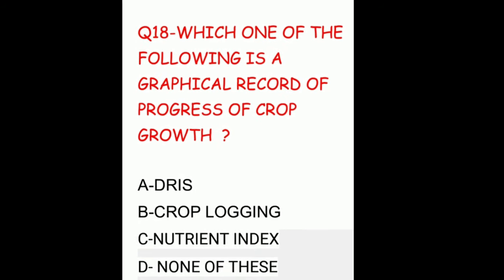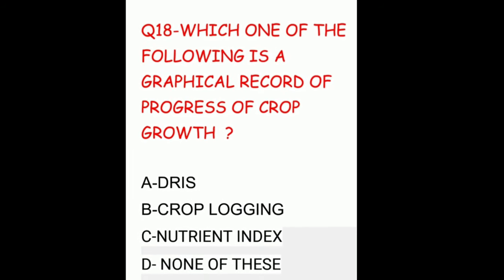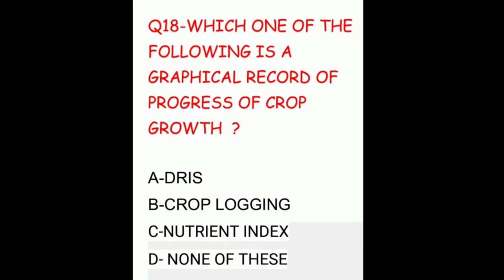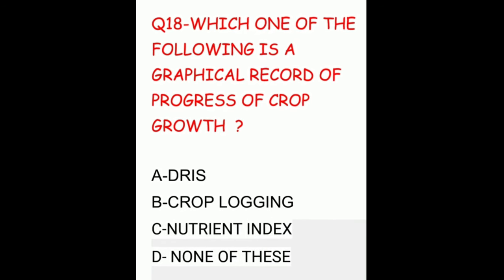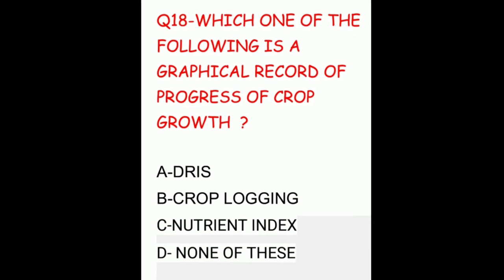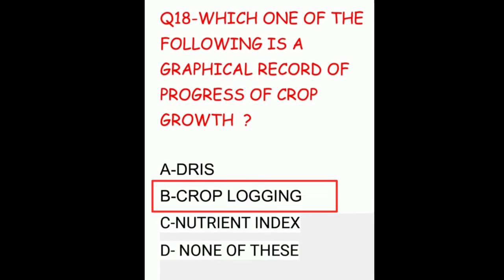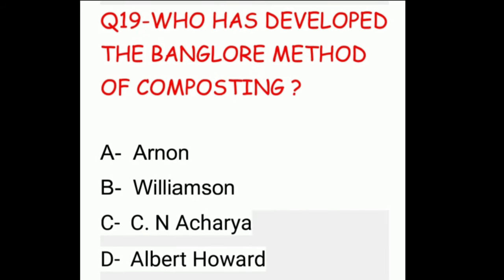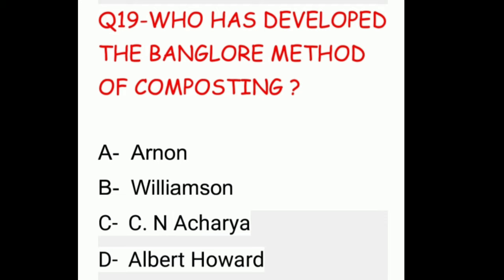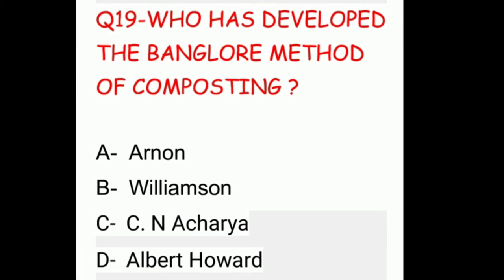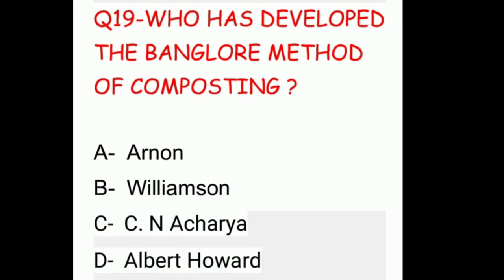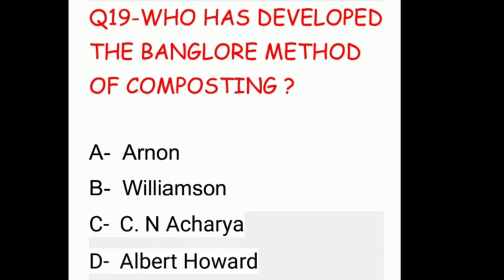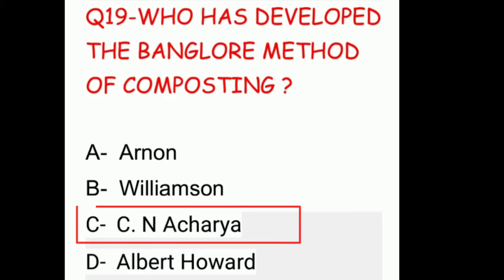Question eighteen: which one of the following is a graphical record of progress of crop growth? The options are DRIS, crop logging, nutrient index, or none of these. The correct answer is crop logging. Question nineteen: who developed the Bangalore method of composting? The options are Arnan, Williamson, C.N. Acharya, or Albert Howard. The correct answer is C.N. Acharya.